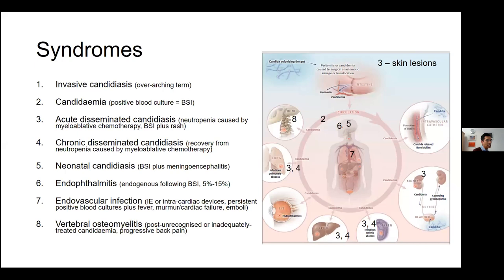Neonatal candidiasis is an entity in itself because bloodstream infection occurs often with meningoencephalitis, and CSF biochemistry and cell counts that are completely normal may not exclude meningitis. Endothelial candidiasis is usually endogenous, follows bloodstream infections, and occurs in about 5% to 15% of people. Endovascular infection is usually endocarditis — sometimes infection of intracardiac devices — occurring in people with persistently positive blood cultures, presenting with fever plus new murmurs, cardiac failure, and large emboli with thromboembolic phenomena.